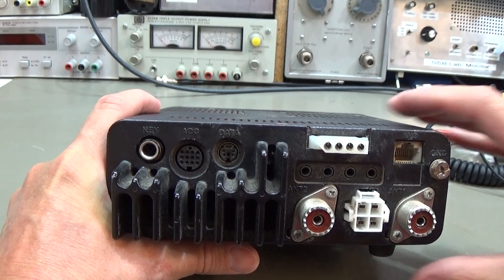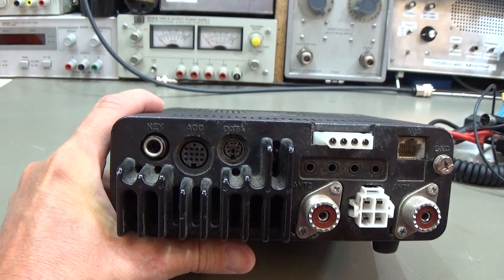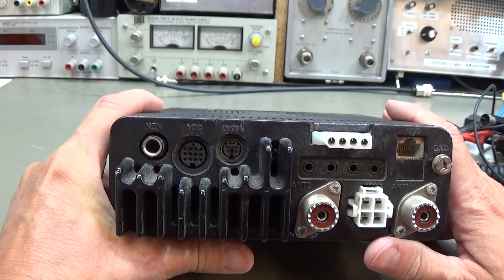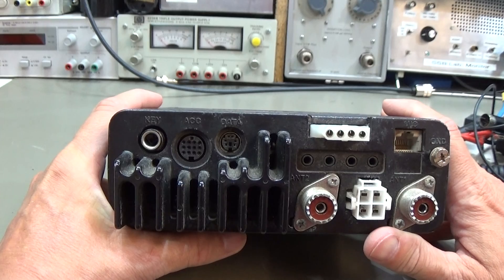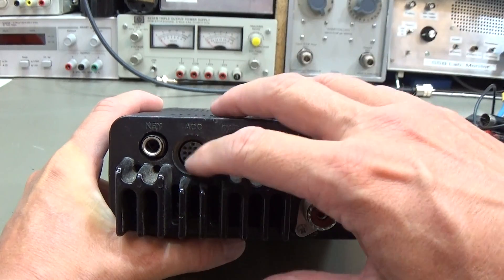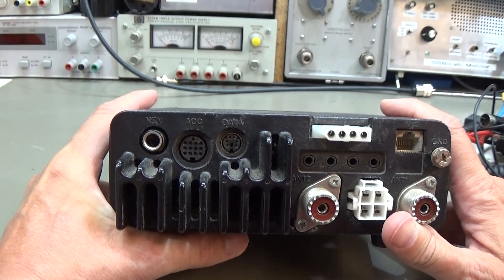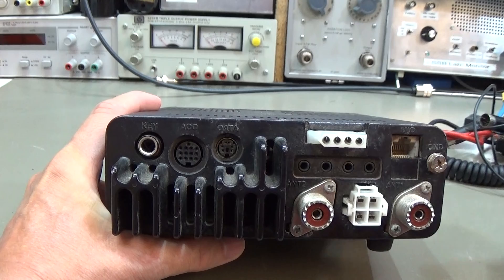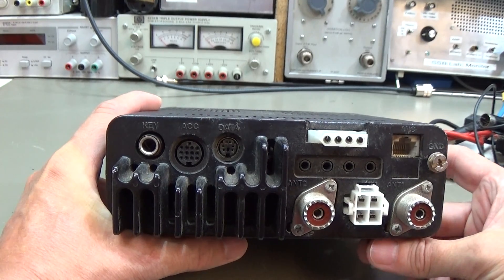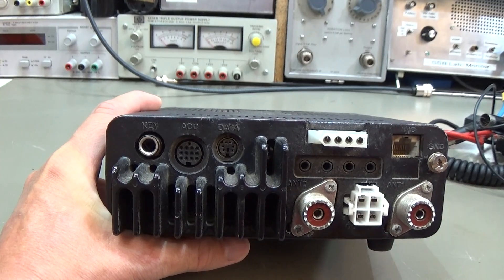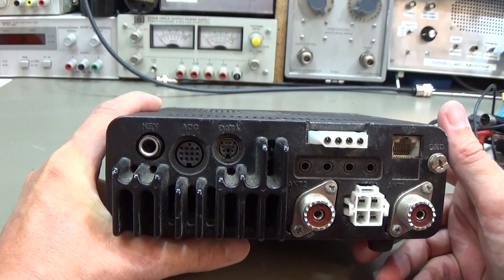For triggering an external power amplifier we have here this ACC socket, and we need a pin which goes to ground to be able to trigger the PTT in the power amplifier so that the power amplifier goes into transmit after the radio has keyed.